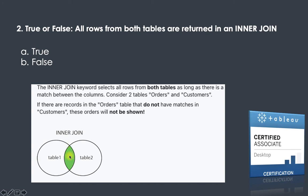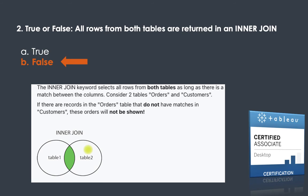If there is no match, those records will not be shown. So the statement 'all rows from both tables are returned in an inner join' is absolutely wrong — it only returns records where there is a match between the two tables. Therefore the answer is false.